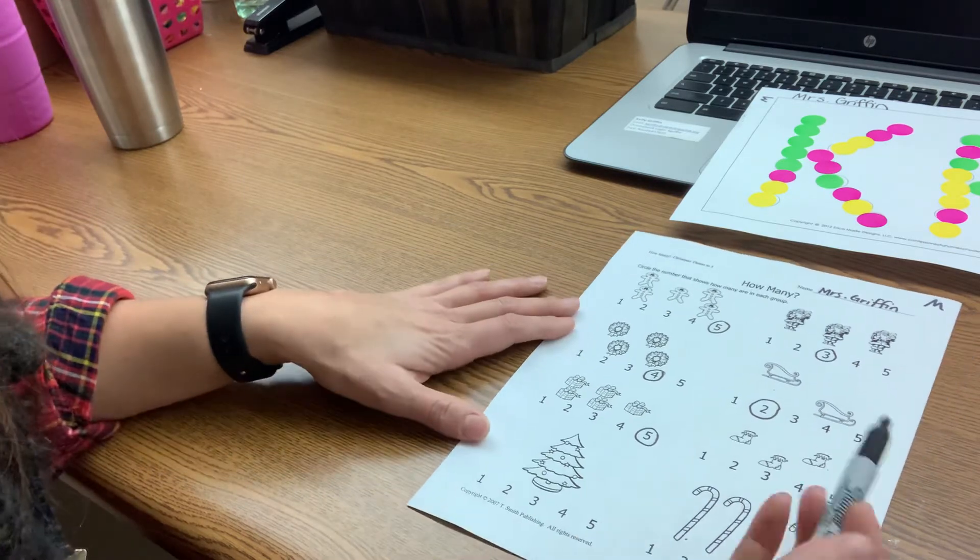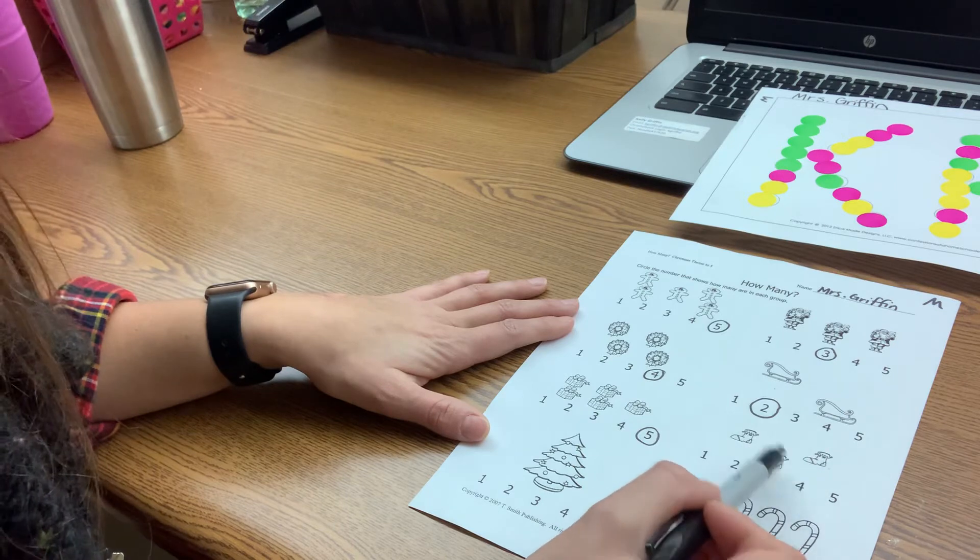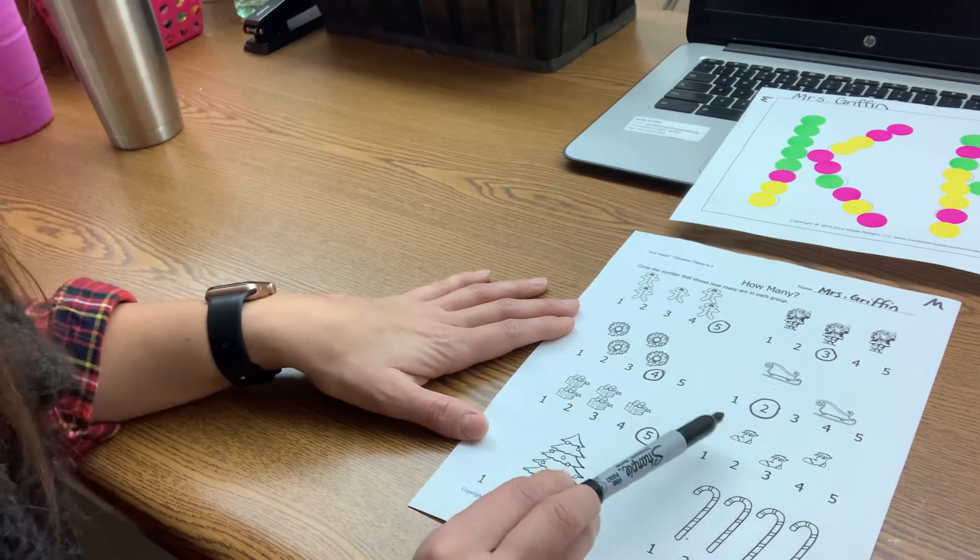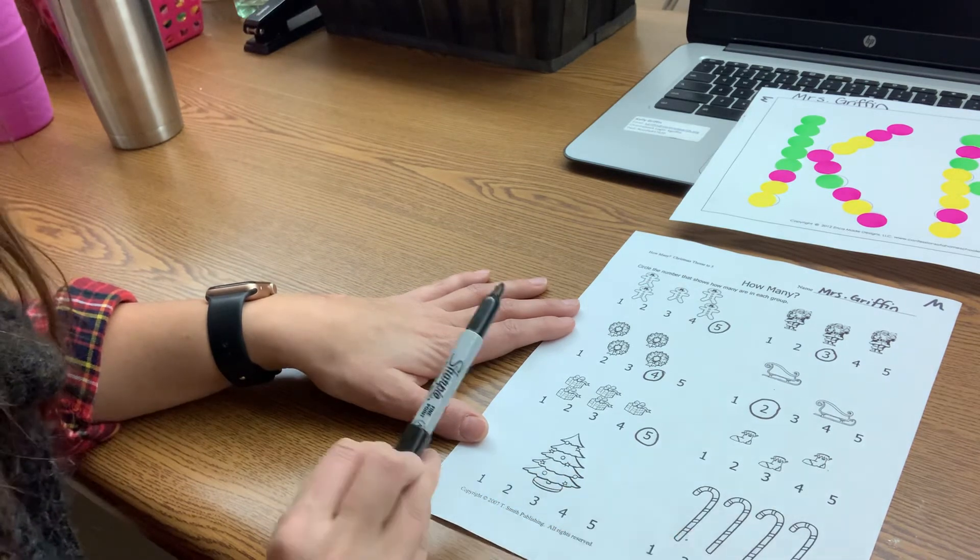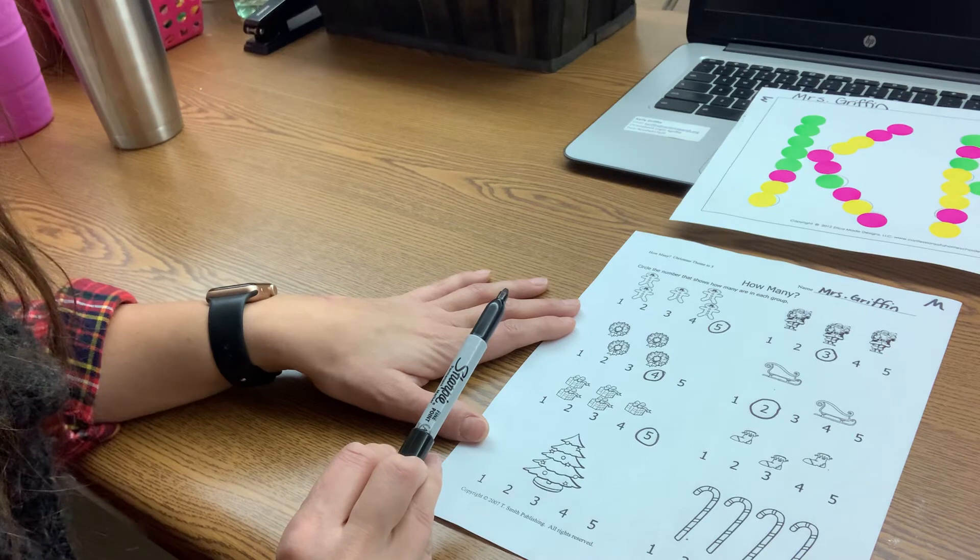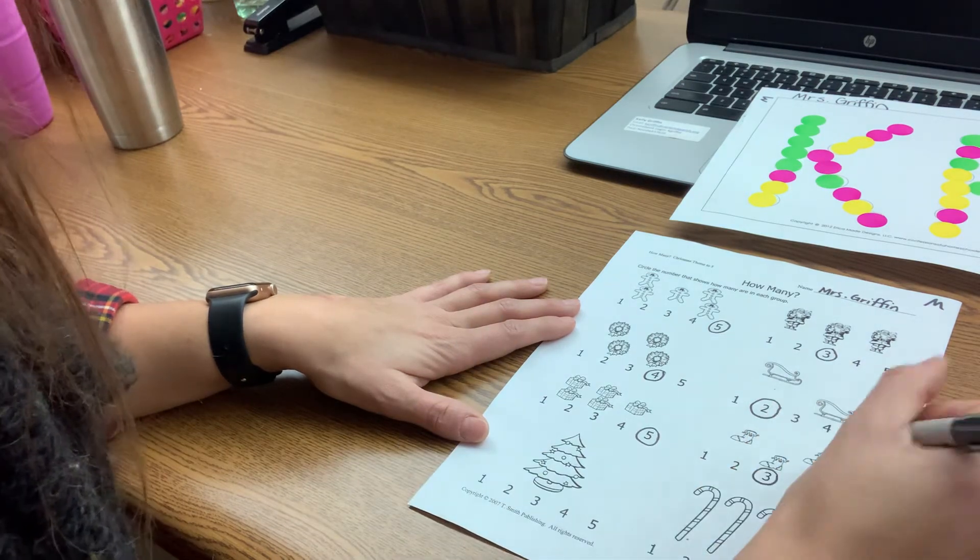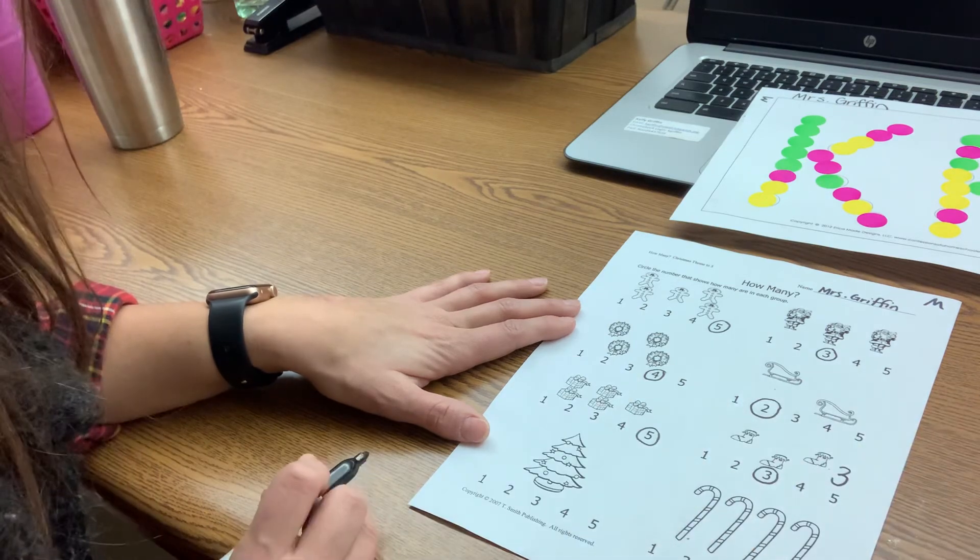All right, now we've got some stockings here. I hope they weren't on someone's stinky foot, I don't know. How many are there? Did you count them? Did you say three? You're right, it's three. Again, you can circle it and you can try to write a three by it if you want. Some of you are ready to do that.